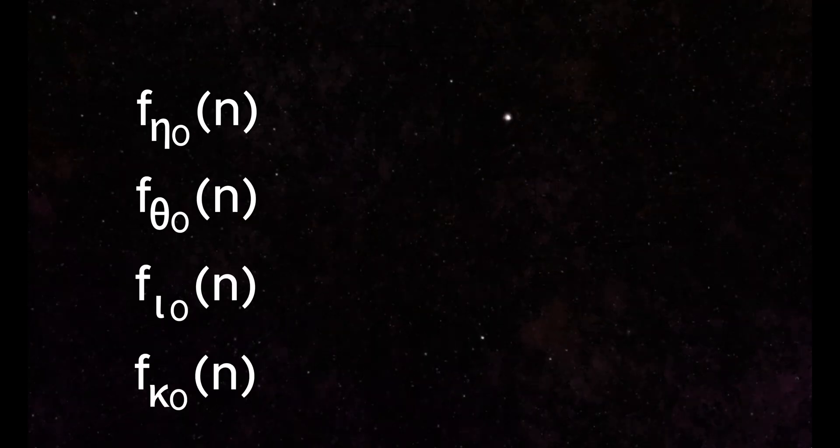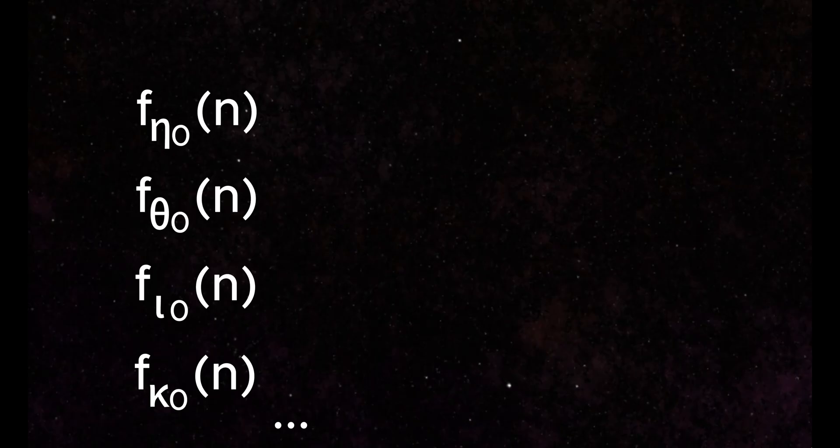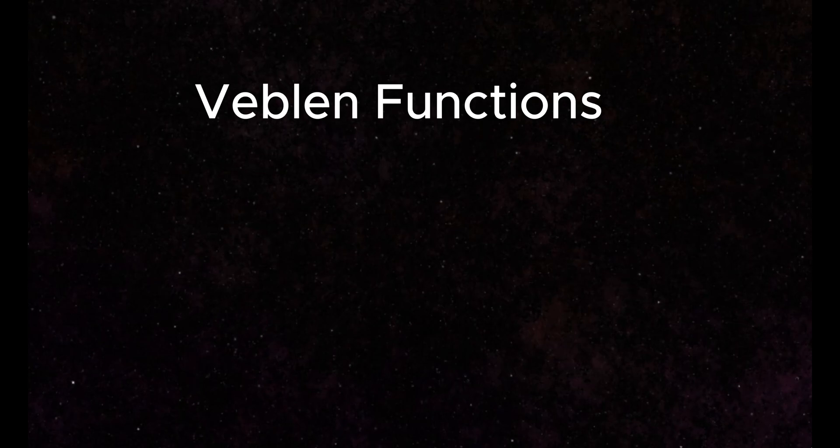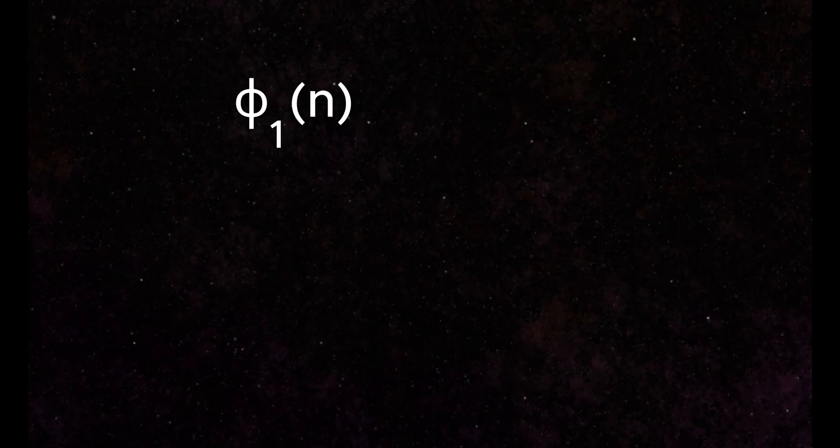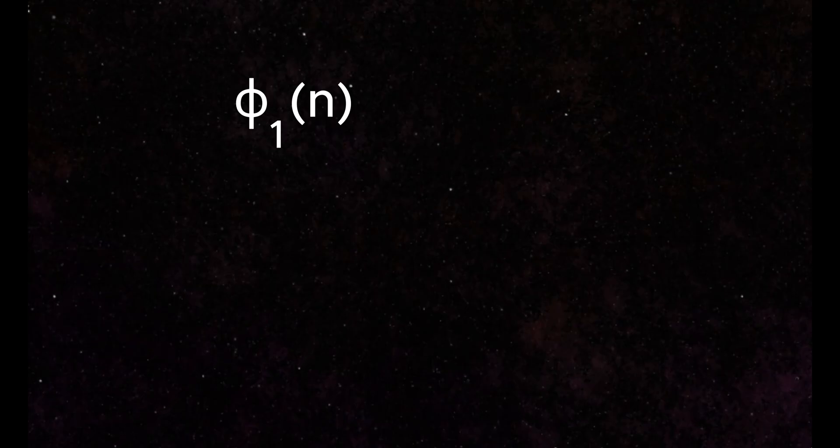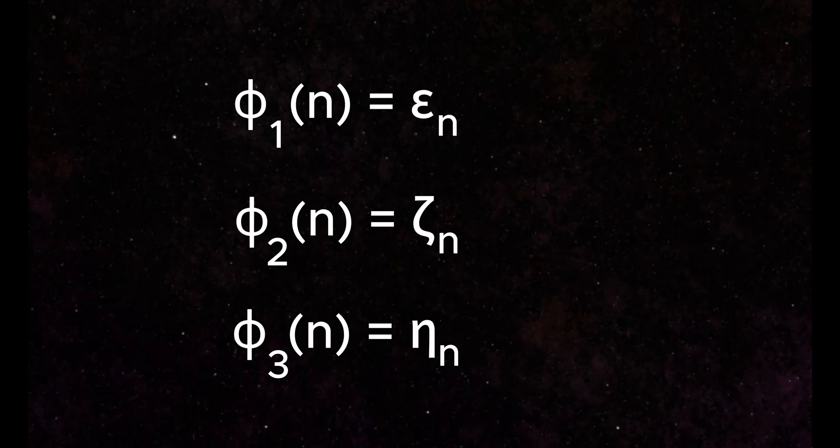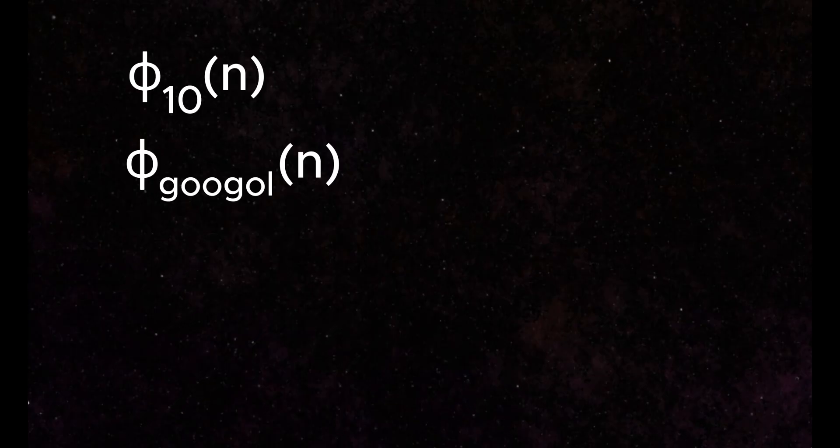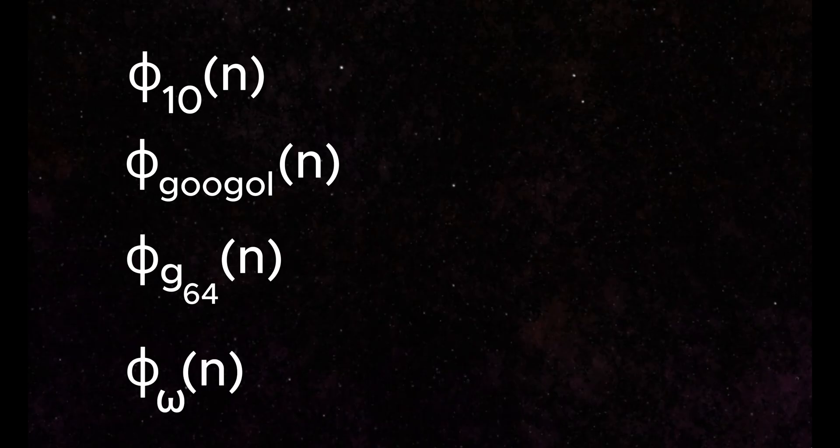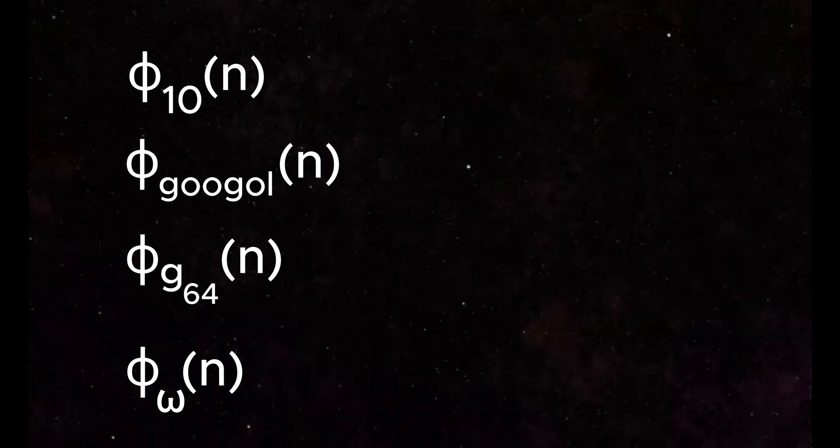But if we keep going, we will run out of Greek letters. So what do we do? This is where Veblen functions come in. We can define Veblen functions using the symbol φ. φ₁ gives us a nested stack of epsilons, whereas φ₂ gives a nested stack of zetas, and φ₃ gives a nested stack of etas. This can continue in this way for any value of φ, giving us reach well beyond the symbols from the Greek alphabet. These values get big very quickly and give us yet a new way to look at growth functions.